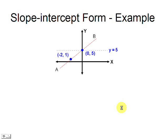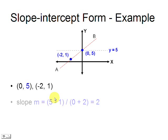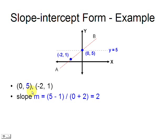In this other example, we know two points, but we must calculate the slope. After the calculations, we discover that the slope is 2.